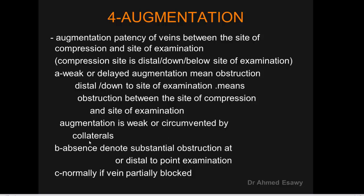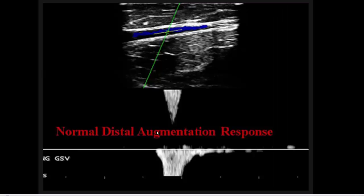Weak or circumvented augmentation may be caused by collaterals. Absence of augmentation denotes substantial obstruction at the distal point of examination. Normal augmentation may be present even when partially blocked. Normal augmentation does not always confirm absence of obstruction. For normal distal augmentation: place the probe at the superficial femoral vein and apply hand compression distally below the site. We find a sudden rise of venous flow and color saturation — a positive normal augmentation response — indicating patency between the site of examination and site of compression.